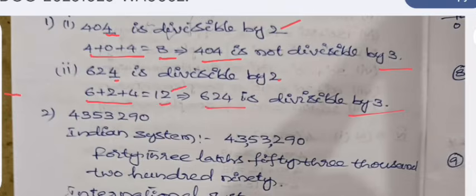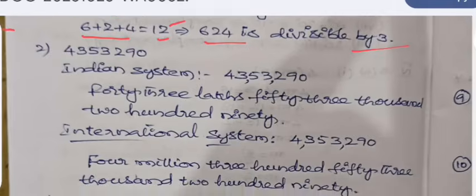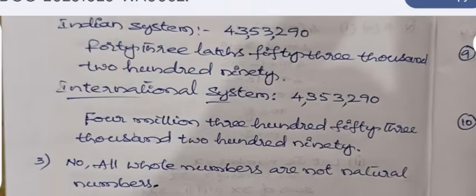The next given number, when it is written in Indian system, the number is read as 43,53,290. When it is written in international system, it becomes 4,353,290.